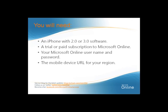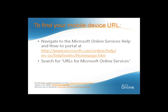And you'll need the mobile device URL for your region. To get that mobile device URL, navigate to the Microsoft Online Services Help and How-To portal, and once there, search for URLs for Microsoft Online Services and then pick the URL for your region.